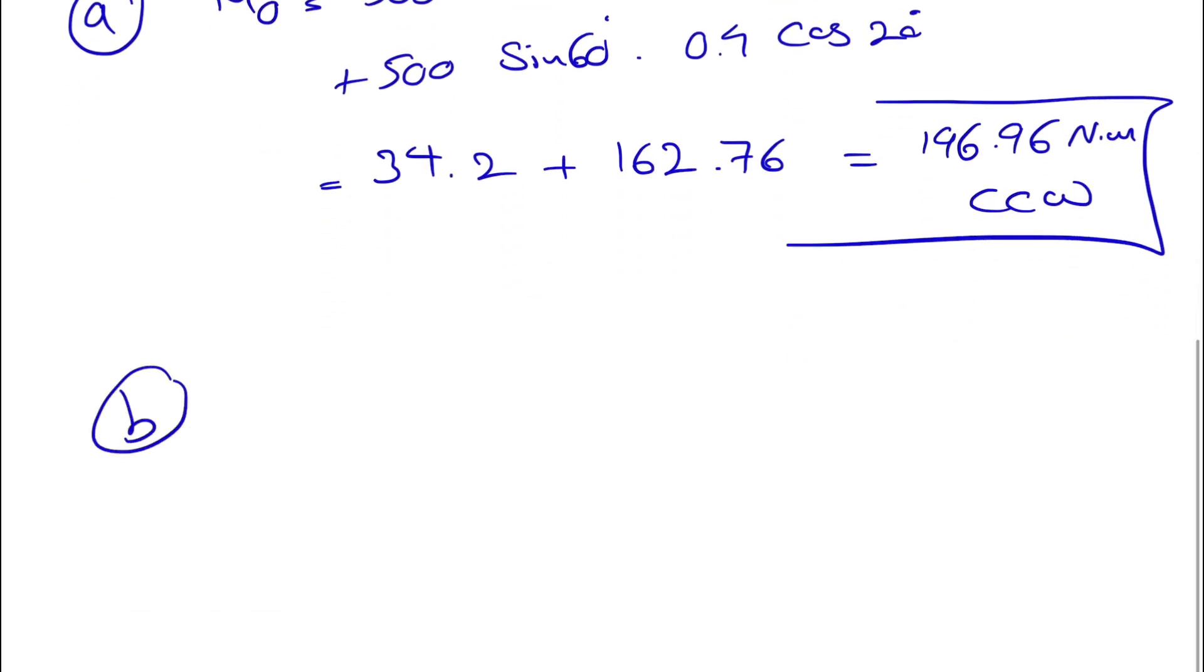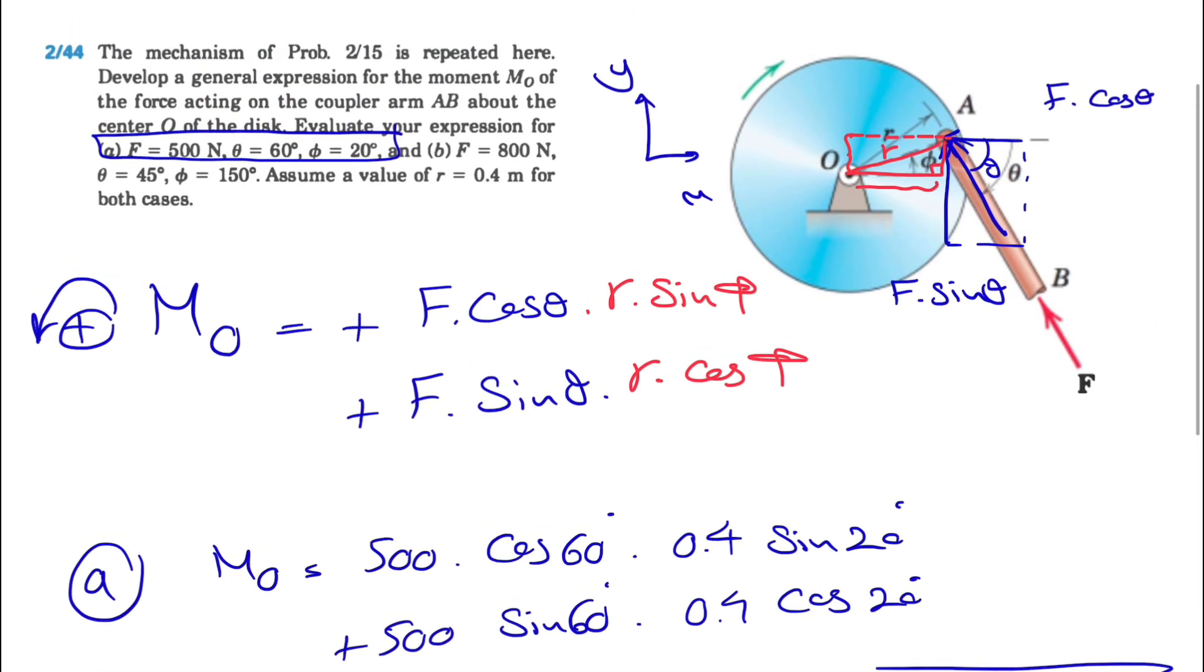So part b is pretty similar, we just have different values. The F is 800, we have the cosine of 45 degrees.